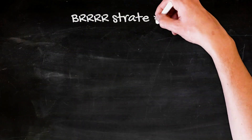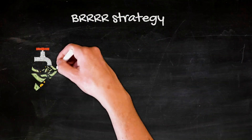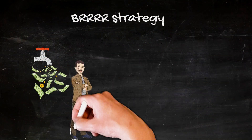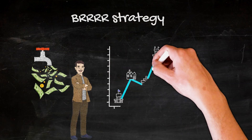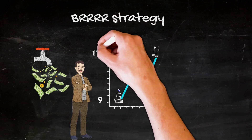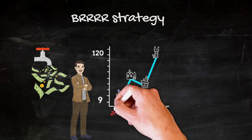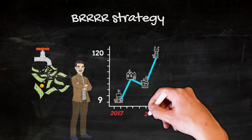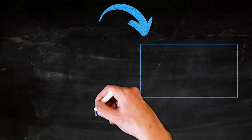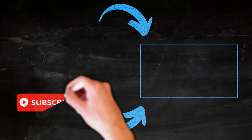Speaking of the BRRRR strategy, if you want to learn how you can make an infinite return using this strategy and how I've been able to grow from 9 rental units to 120 rental units in just 5 years, click or tap on this video on the screen, and I'll see you there.